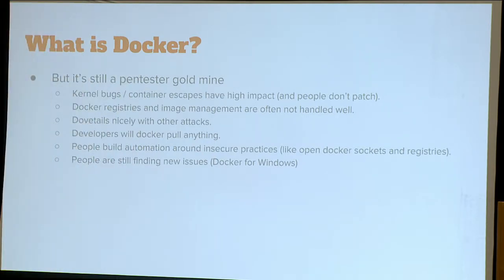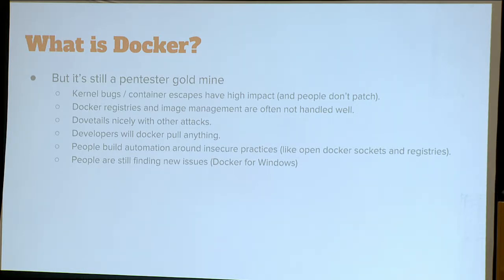The kernel is a huge attack surface for Docker still. Container escapes and attacking the kernel really have high impact. Docker registries and image management are not handled well by default — you download a registry and start running it, and there's no authentication, no authorization. You just push stuff and pull stuff. Developers will Docker pull anything; you can trick developers into Docker pulling things they probably shouldn't. And people build automation around these insecure practices. People are still finding new issues with Docker, particularly this summer. The Docker project will focus in one area of security, do a really good job, and then move on, and they still haven't gotten to everything yet.